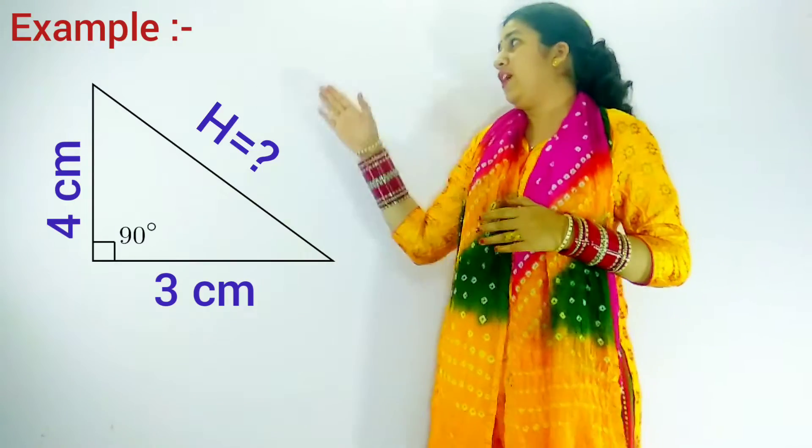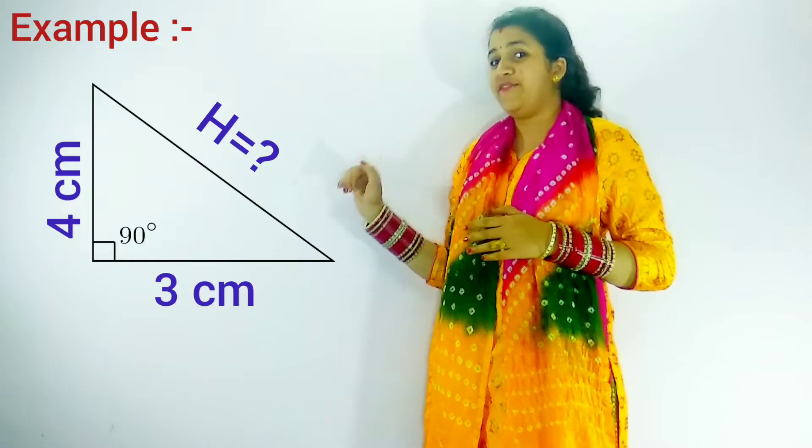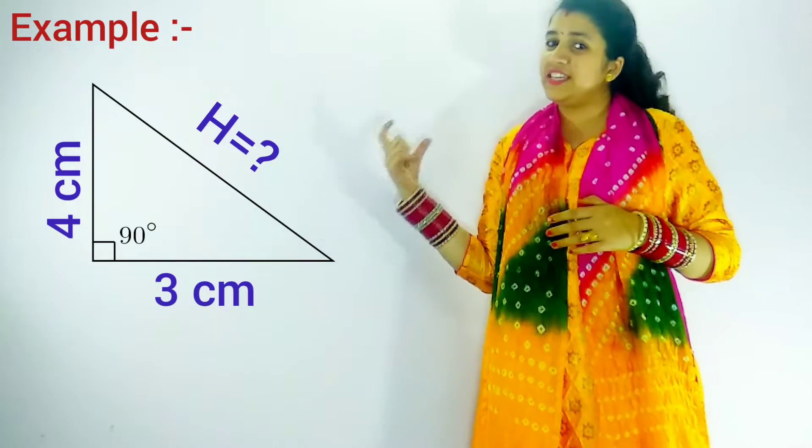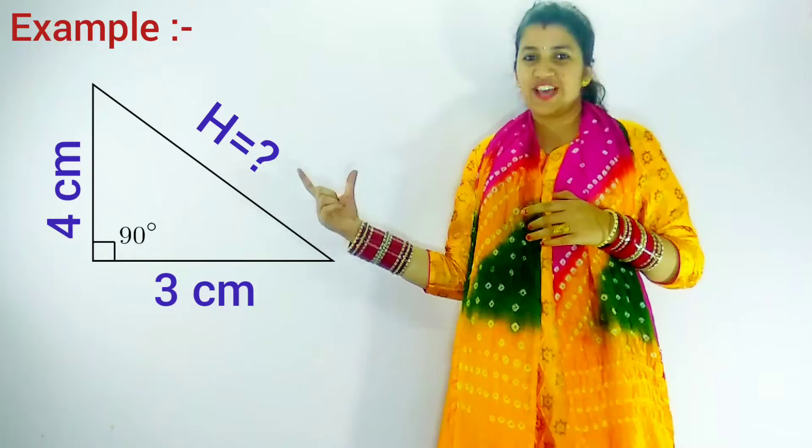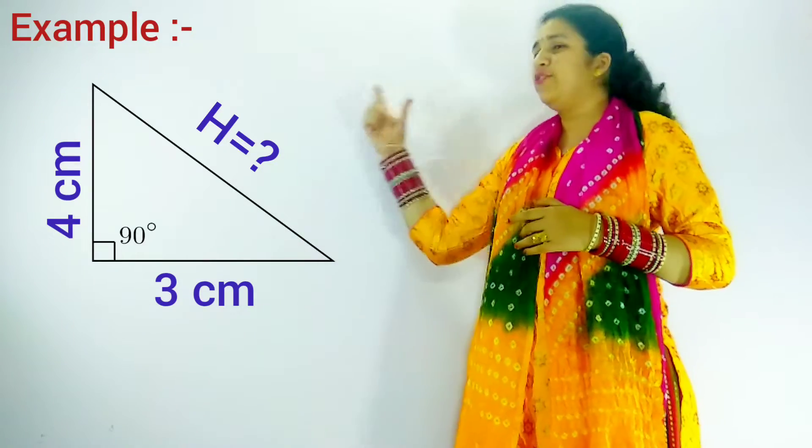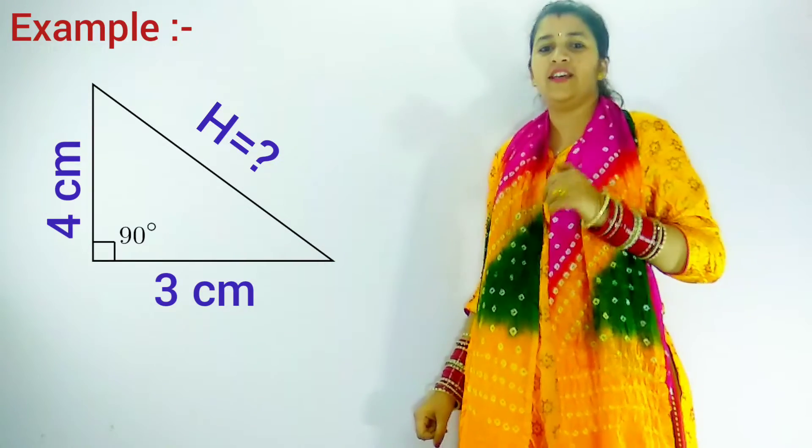We will take an example. We have a right triangle in which the base is 3 cm and the perpendicular is 4 cm. We have to calculate the hypotenuse.